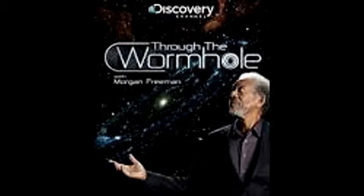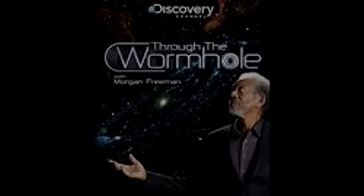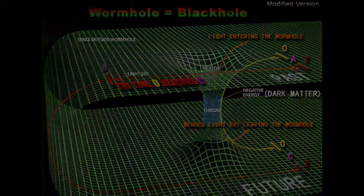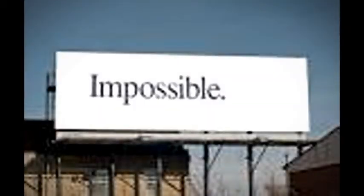Whether wormholes occur naturally, or if we can hold them open long enough to travel through them, is even more undetermined than their existence. Scientists think that if a spherical wormhole was made in part with negative material, called exotic material, it could be held open, making the wormhole traversable. Traversable wormholes are, however, most likely impossible.